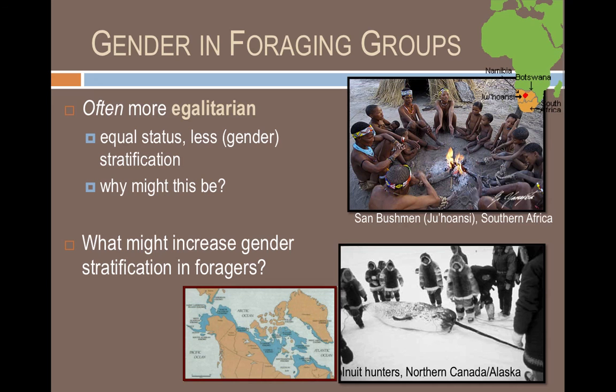This is a perfect example of how geography is important for understanding culture. Just because of the location of these two groups — northern North America, where it's very cold, versus southern Africa, where it's tropical with many more types of foods available — there is a direct relationship to the status of genders within those societies. Where you live in the world can determine your social status. Environment affects culture in really profound ways, and we can't remove that from the equation.